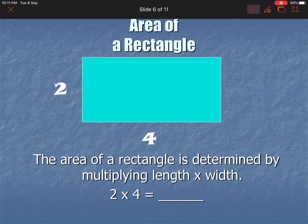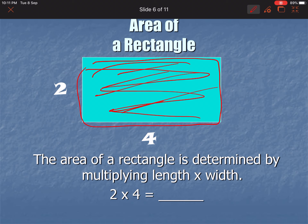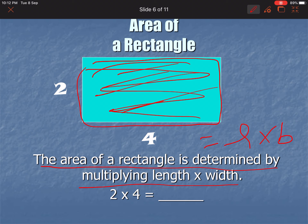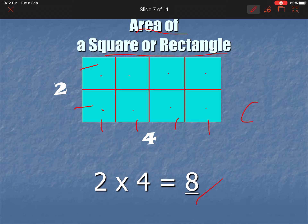Next one: Area of a Rectangle. To calculate the area of a rectangle, the area means the surface occupied by the whole rectangle — we are not talking about the boundary now, but everything inside. The area of a rectangle is determined by multiplying the length and width. That is the simple formula: Length multiplied by Width. For example, 2 multiplied by 4 is 8, so 8 is the answer.